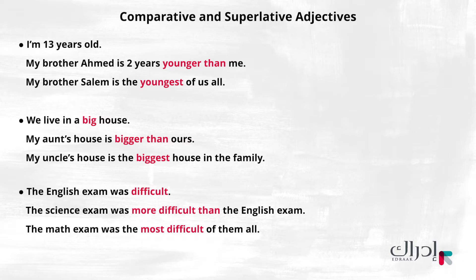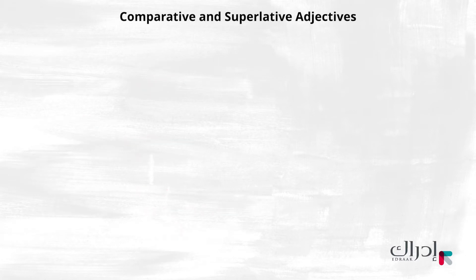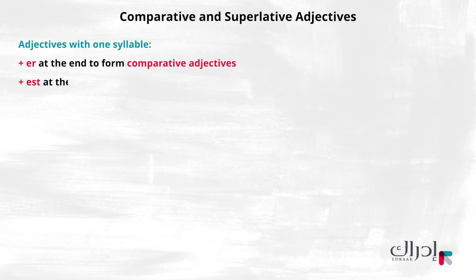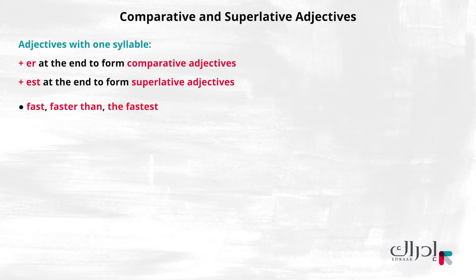Now, I'm going to explain how to form comparative and superlative adjectives. Adjectives with one syllable add ER at the end to form comparative adjectives, or EST at the end to form superlative adjectives. For example: close, closer than, the closest.